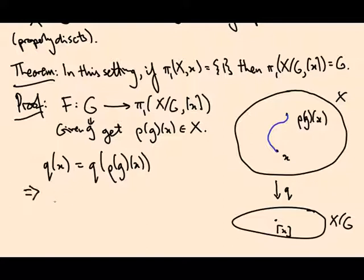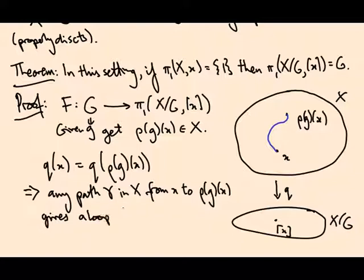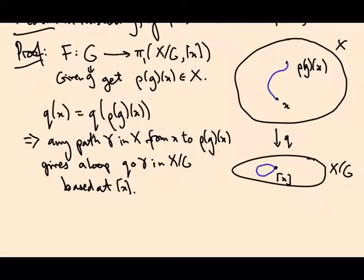Because when I project along the quotient map, q of x equals q of ρ(g) of x. So any path γ in X from little x to ρ(g) of little x gives a loop q composed γ in X/G based at the equivalence class of x. That's what this map is going to be. So F of g is the homotopy class of q composed γ.